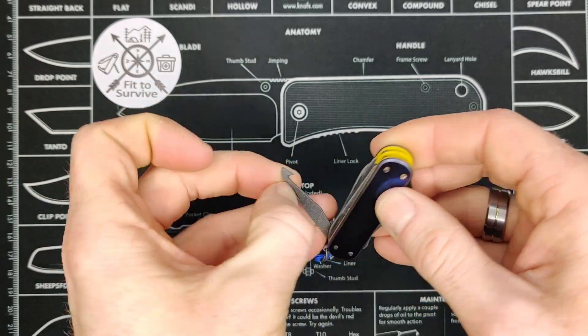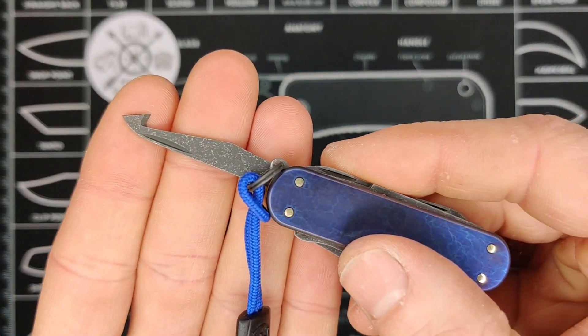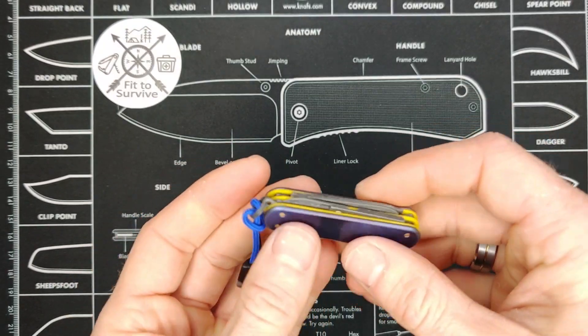All right, like I've already said, we have the cut and pick. Got this hook blade. And lastly, the scissors.